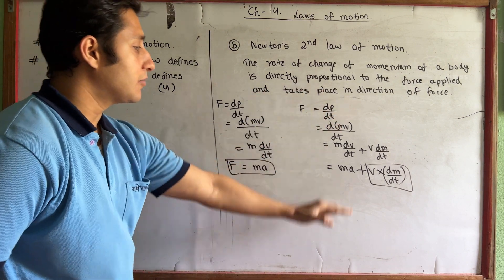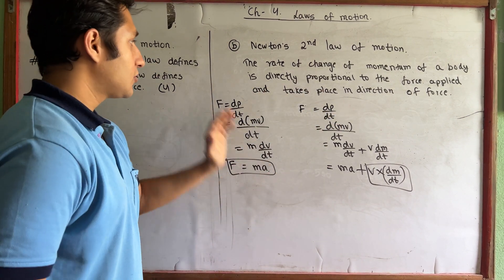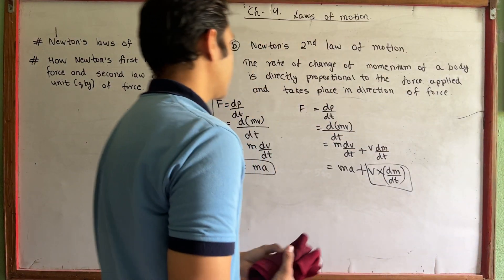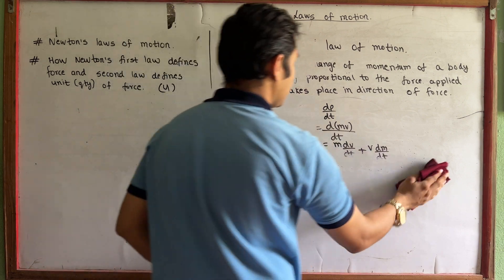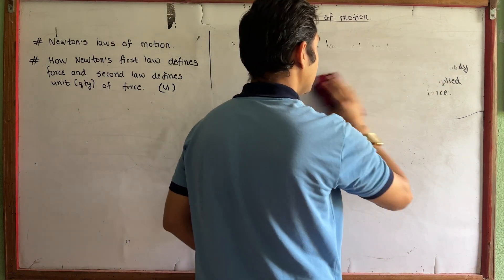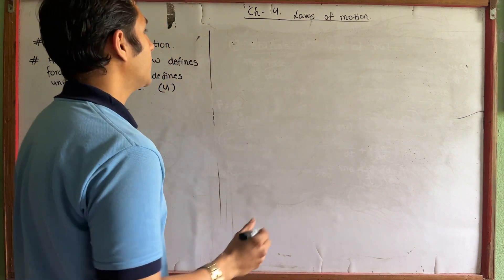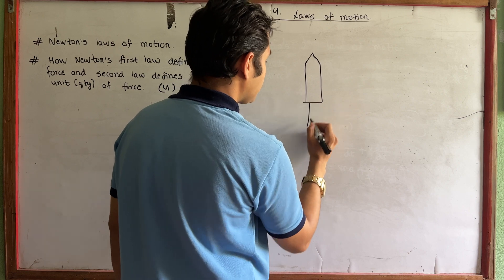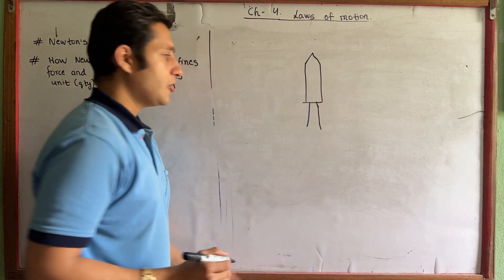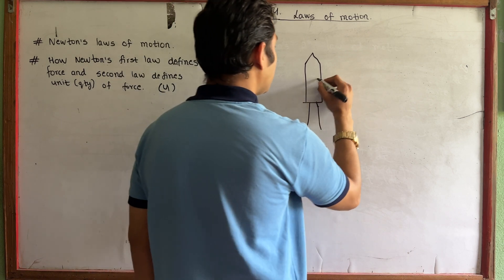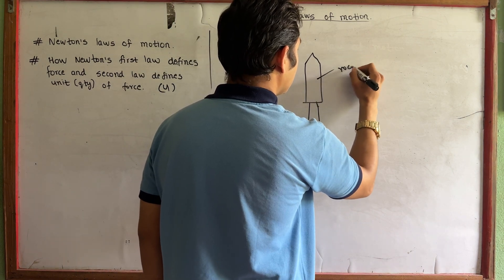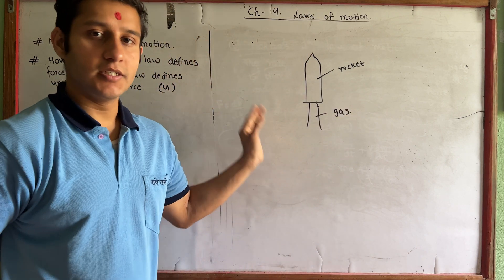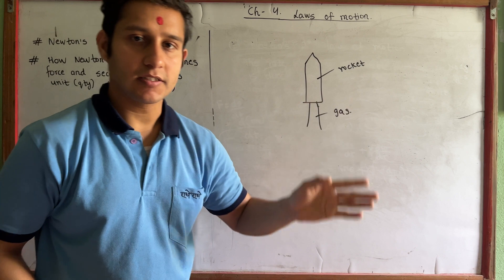So dp/dt equals force — this is Newton's second law of motion. Now Newton's third law of motion: every force has its equal and opposite reaction, acting upon different bodies. I will give you the statement and then the example. Let me tell you about two bodies.